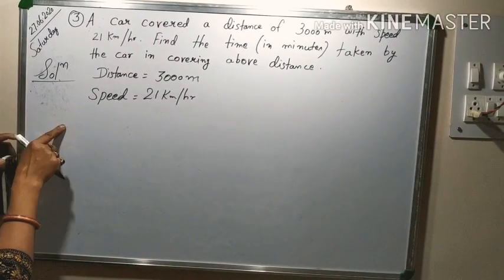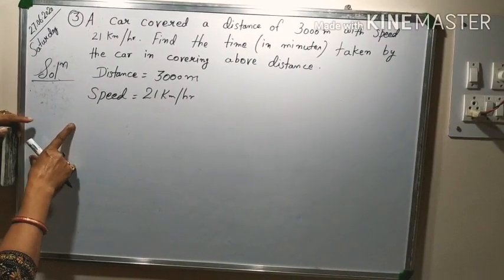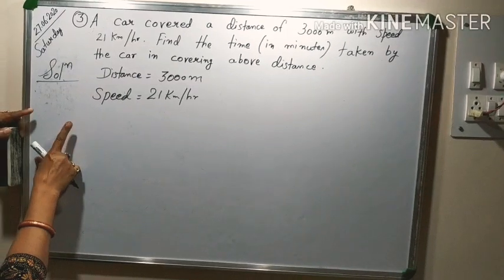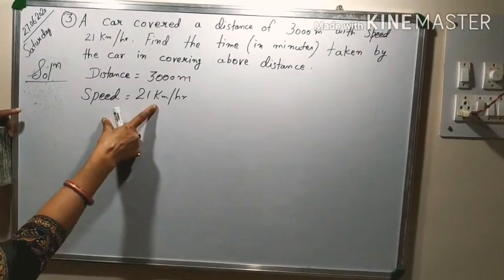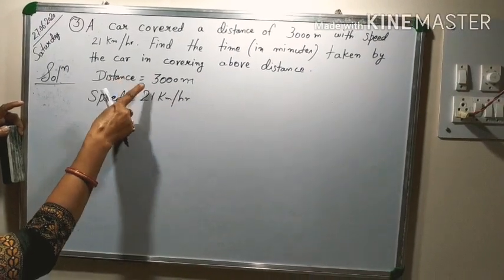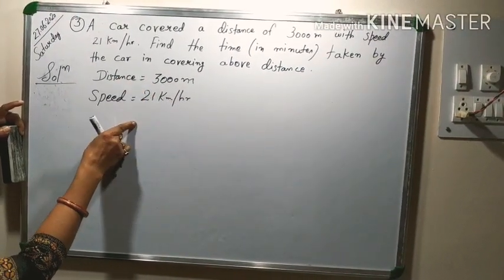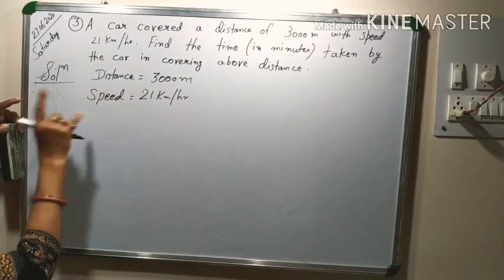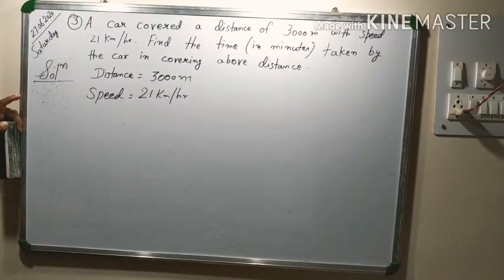Distance is given 3000 meter and speed is 21 km per hour. As I told earlier, that we have to be very much careful regarding the unit. Your speed is in kilometer per hour and distance in meter. So either we will change this distance into kilometer or the speed we will change into meter per second.